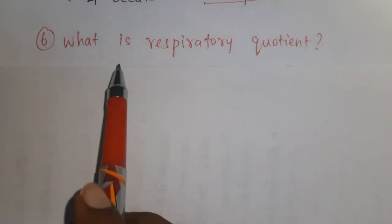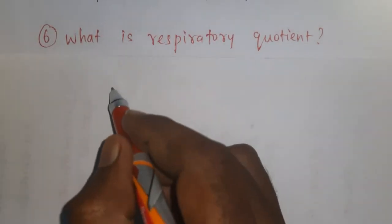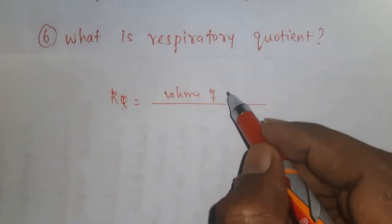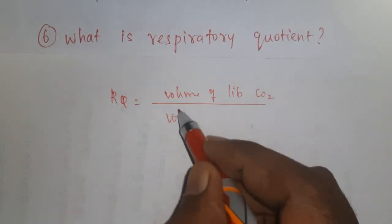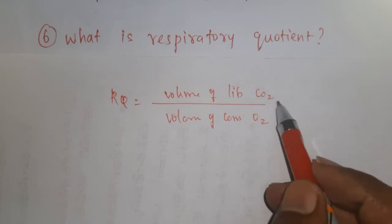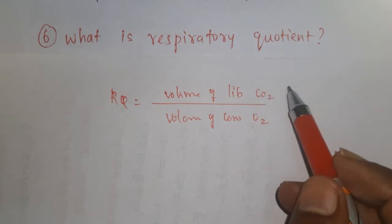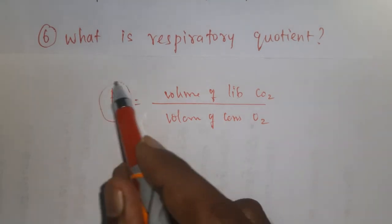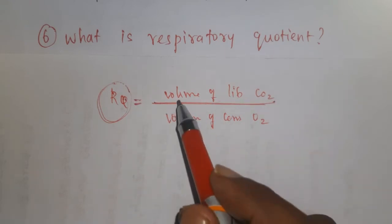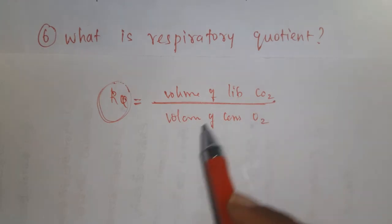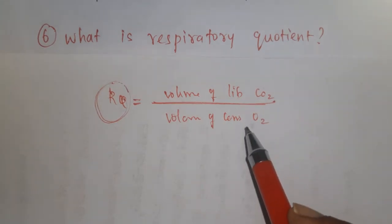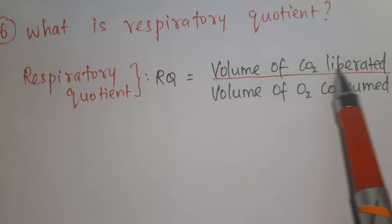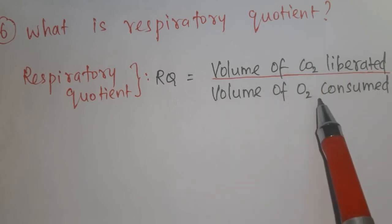Question number six: what is respiratory quotient? Respiratory quotient is defined as the ratio of the volume of carbon dioxide liberated to the volume of oxygen consumed during respiration.